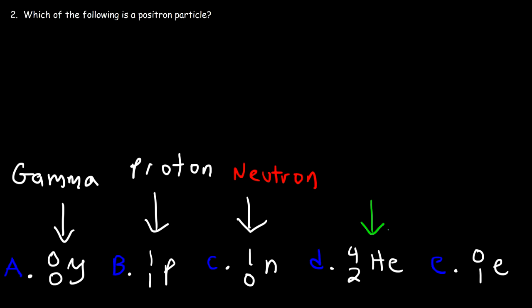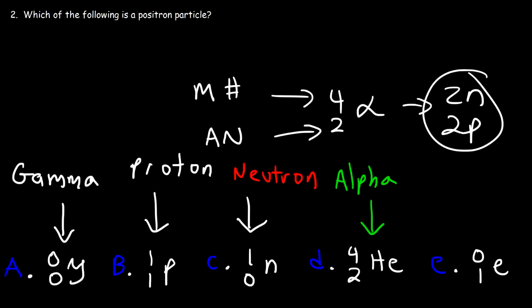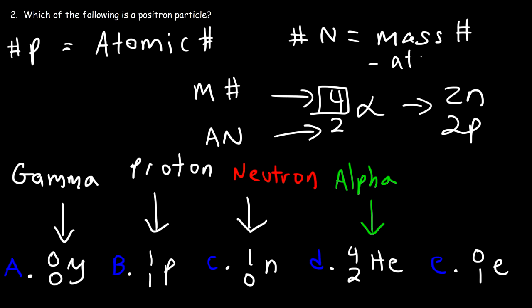Answer choice D is an alpha particle, which is the same as the nucleus of a helium atom. The nucleus of a helium atom has two protons and two neutrons. The bottom number is the atomic number — equal to the number of protons — and the top number is the mass number, which is protons plus neutrons. So an alpha particle has atomic number two and mass number four. The number of neutrons equals the mass number minus the atomic number: four minus two gives us the two neutrons.